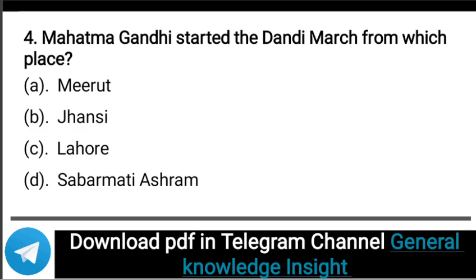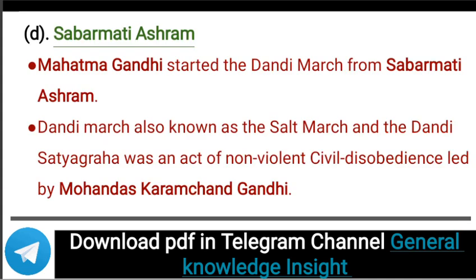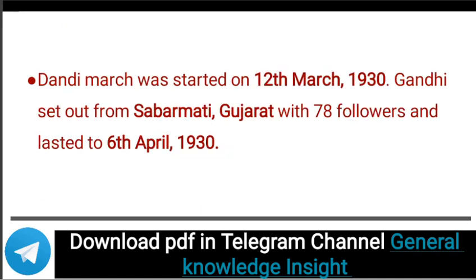Next question: Mahatma Gandhi started the Dandi March from which place? The correct answer is option D, that is Sabarmati Ashram. Mahatma Gandhi started the Dandi March from Sabarmati Ashram. The Dandi March, also known as the Salt March and the Dandi Satyagraha, was an act of non-violent civil disobedience led by Mohandas Karamchand Gandhi. The Dandi March was started on 12th March 1930; Gandhi set out from Sabarmati Ashram with 78 followers and it lasted until 6th April 1930.